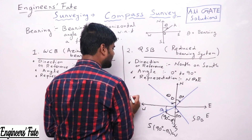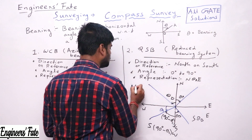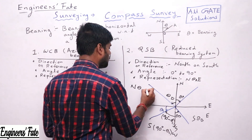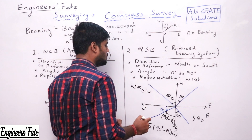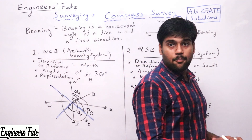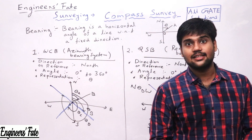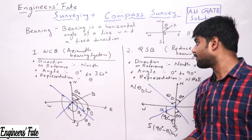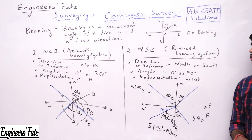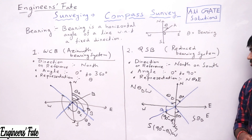If there is a line in the fourth quadrant with angle theta D, the representation will be N theta D W. Please note this down and pause the video.